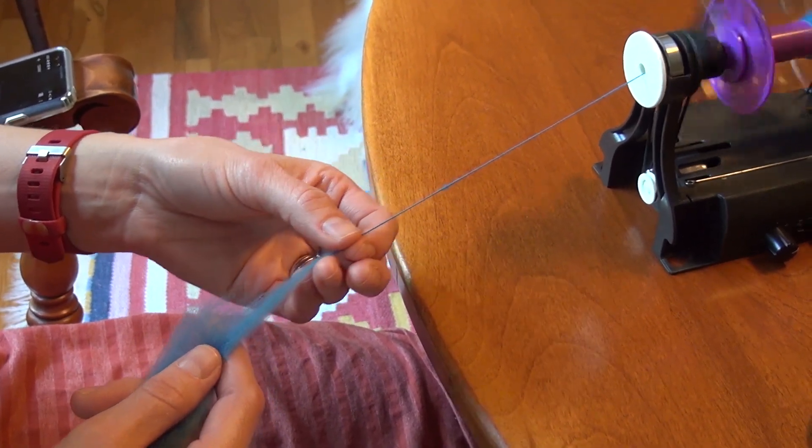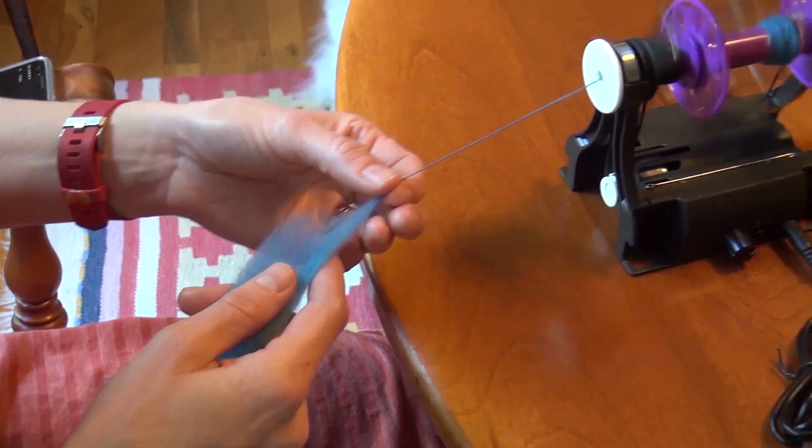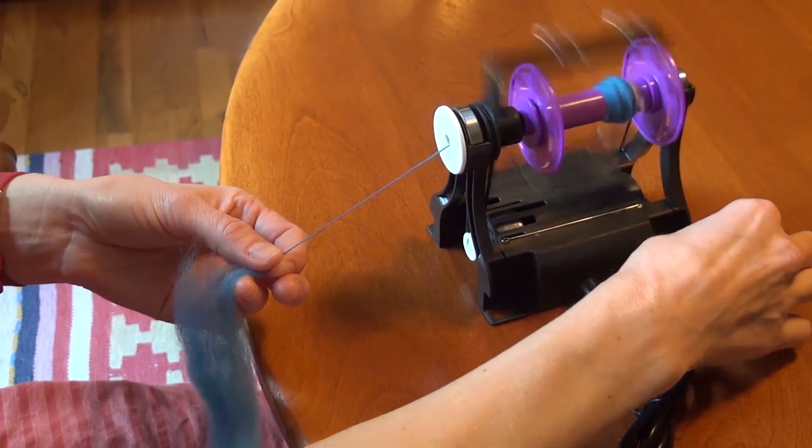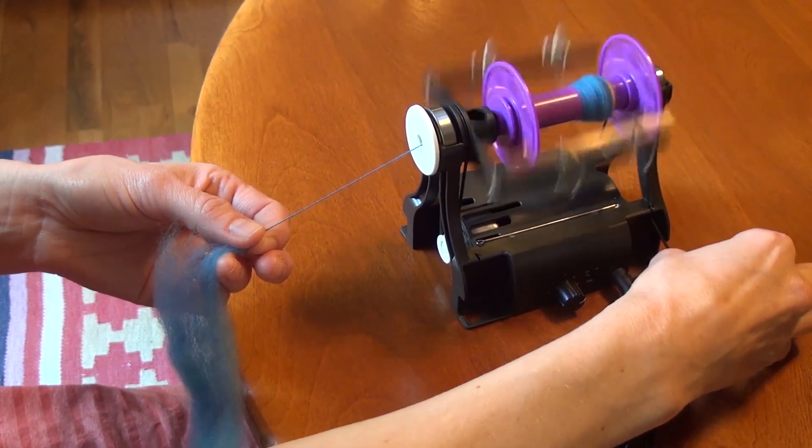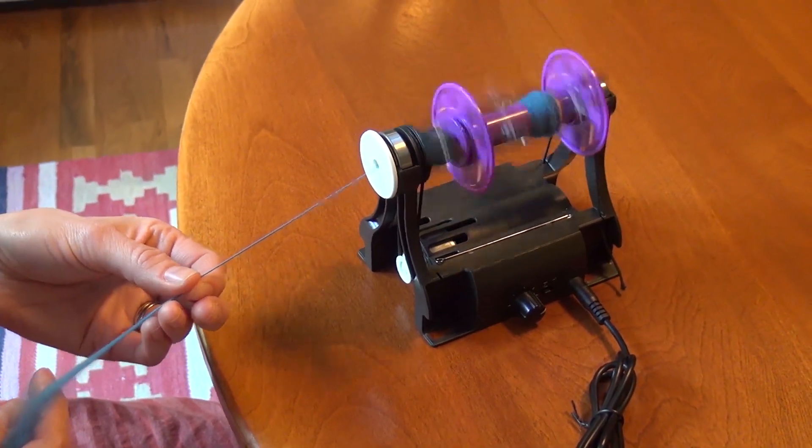Once you start spinning you'll notice that your yarn starts getting pulled onto the bobbin. This is called uptake. If you want more uptake you can make the tension band tighter. If you want less uptake make the tension band looser.